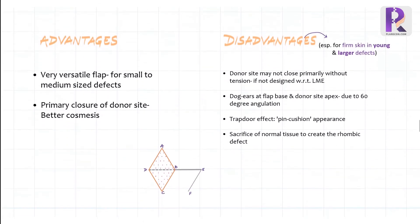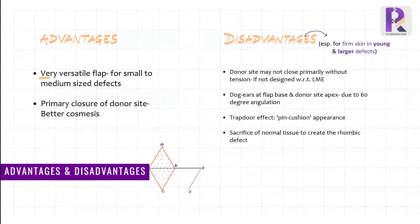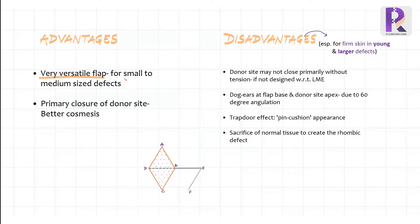It's a very versatile flap for small and medium-sized defects, especially on the face, where using skin laxity and geometry, the donor side just closes primarily like magic. It gives rise to aesthetically superior reconstruction.